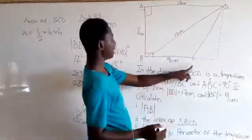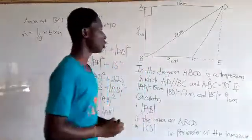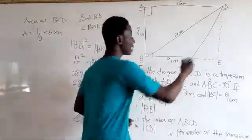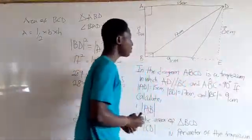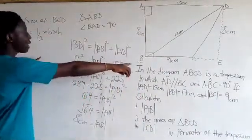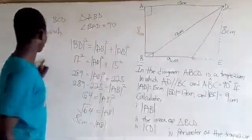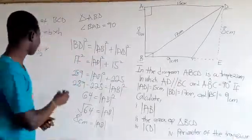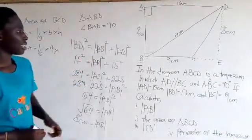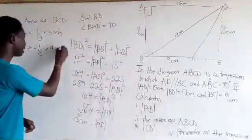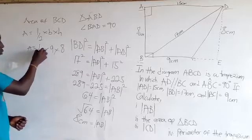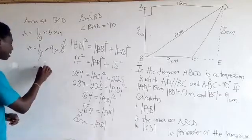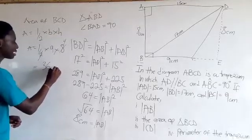Let's name the extended point E. Now we have the height. If side AB is 8cm, then automatically this corresponding height DE is also 8cm. The area of triangle BCD equals half times base 9cm times height 8cm. Two goes into 8 four times, and 4 times 9 gives us 36, so the area is 36cm².